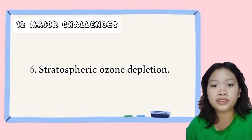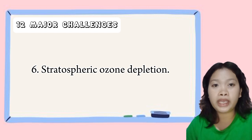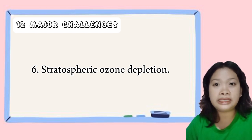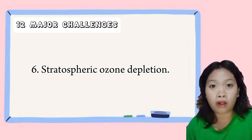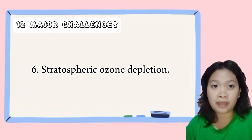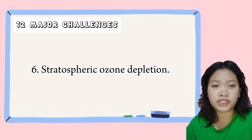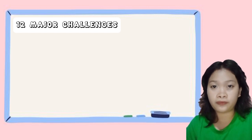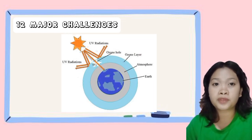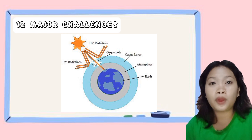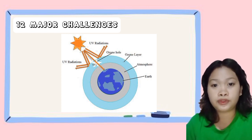Next is ozone depletion. The depletion of the ozone layer in the stratosphere can lead to increased levels of harmful ultraviolet radiation reaching the Earth's surface. Ozone depletion is caused by the release of chemicals such as chlorofluorocarbons into the atmosphere. These chemicals react with ozone molecules in the stratosphere and destroy them. For example, the hole in the ozone layer over Antarctica allows harmful ultraviolet radiation to reach the Earth's surface.